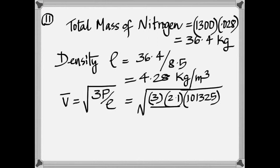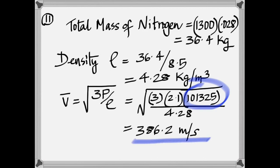And the root mean squared velocity is given by square root 3 times the pressure by density. Pressure is 2.1 atm and you've got to change into pascals. That's why you multiply with this to change into pascals. Finally, you get 386.2 meters per second, which is not slow.